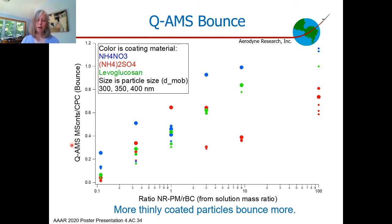Here are the results for the quadrupole AMS bounce measurements. On the y-axis is mass spectrometer over CPC — a measure of bounce, where zero means all particles bounce and are not detected, and one means all particles are detected by both instruments. On the x-axis is the ratio of non-refractory material to black carbon from the mass ratio in solution. You can see that as you put more and more material on the particles, they bounce less and less.